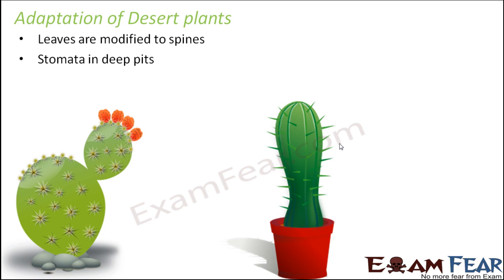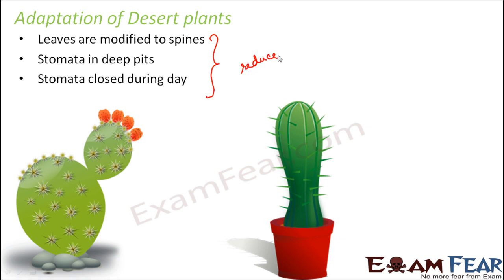The stomata in desert plants remain closed during the day, so if they don't open, there can be no water loss. All these modifications ensure that water loss is minimized. This is the main agenda for desert plants — plants and animals that survive in the desert must be capable of surviving with a low requirement for water.